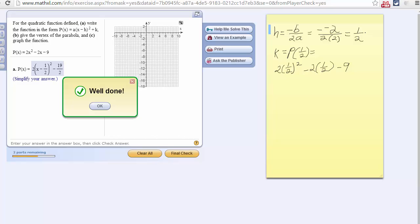So the x-coordinate of the vertex is 1 half, and I plug it in here, and there it is right there.